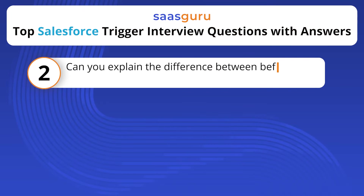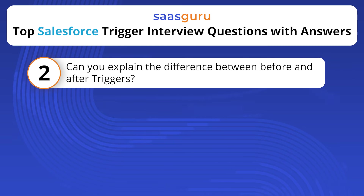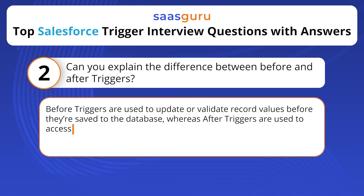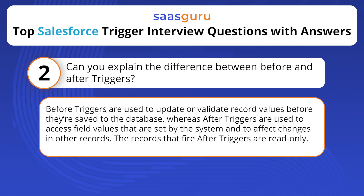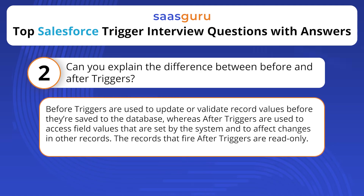Can you explain the difference between before and after triggers? Before triggers are used to update or validate record values before they're saved to the database, whereas after triggers are used to access field values that are set by the system and to affect changes in other records. The records that fire after triggers are read-only.